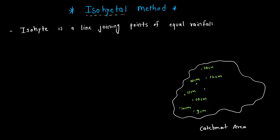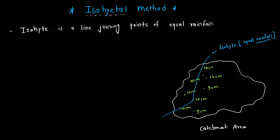Here also we take 9 cm. The 10 cm values are repeating at several points. So if we draw a line connecting the 10 cm points, the line will start here, go here, and then here. This line we can call an isohyet — a line joining points of equal rainfall.